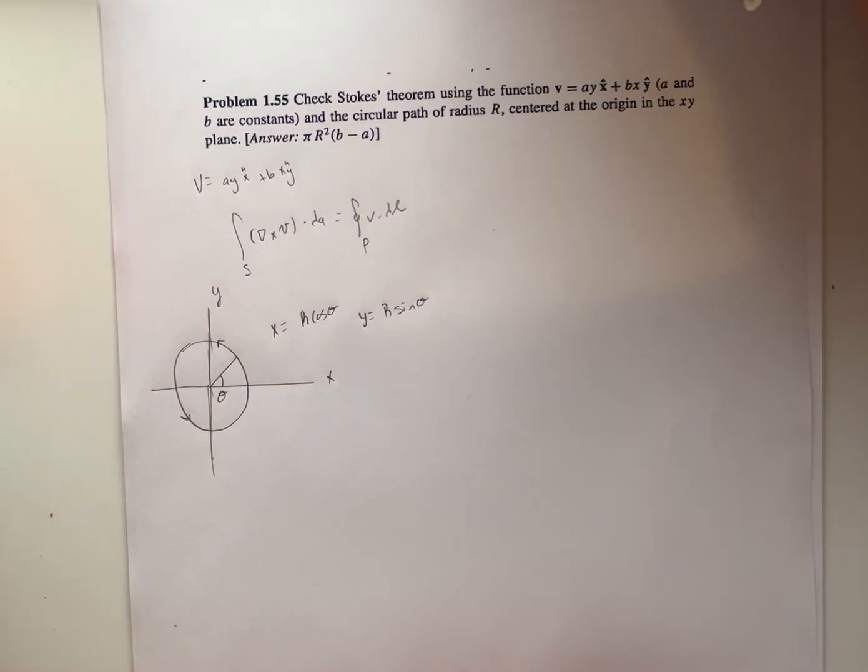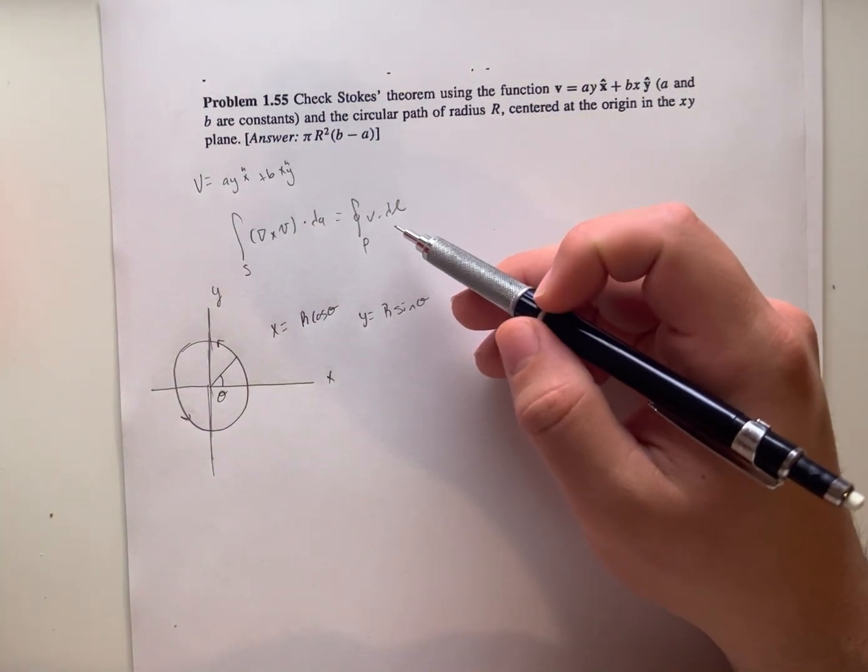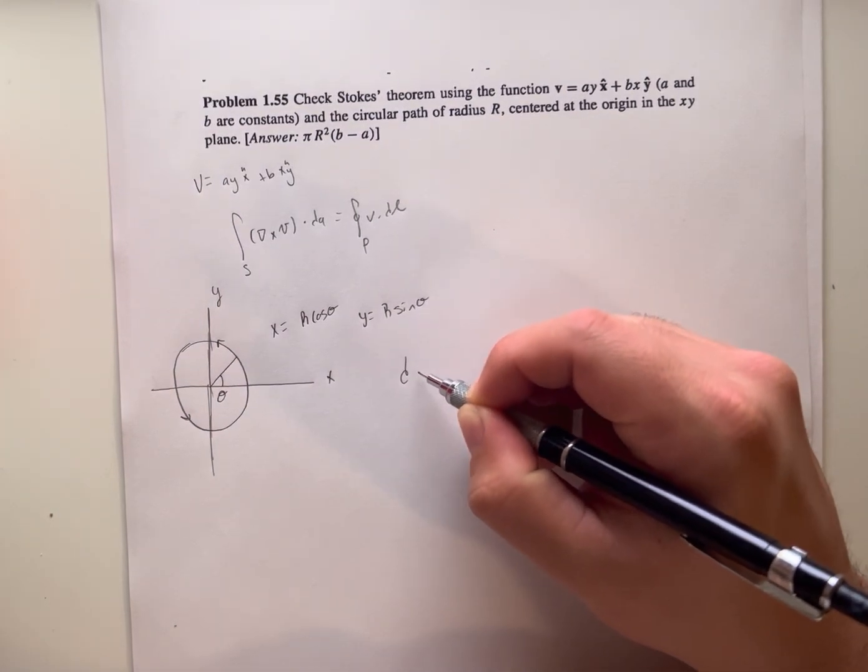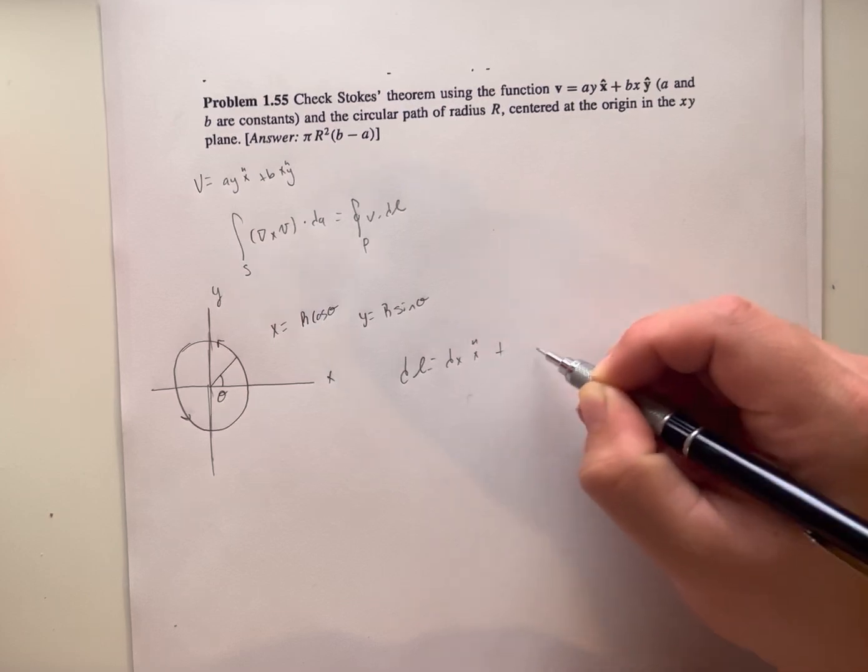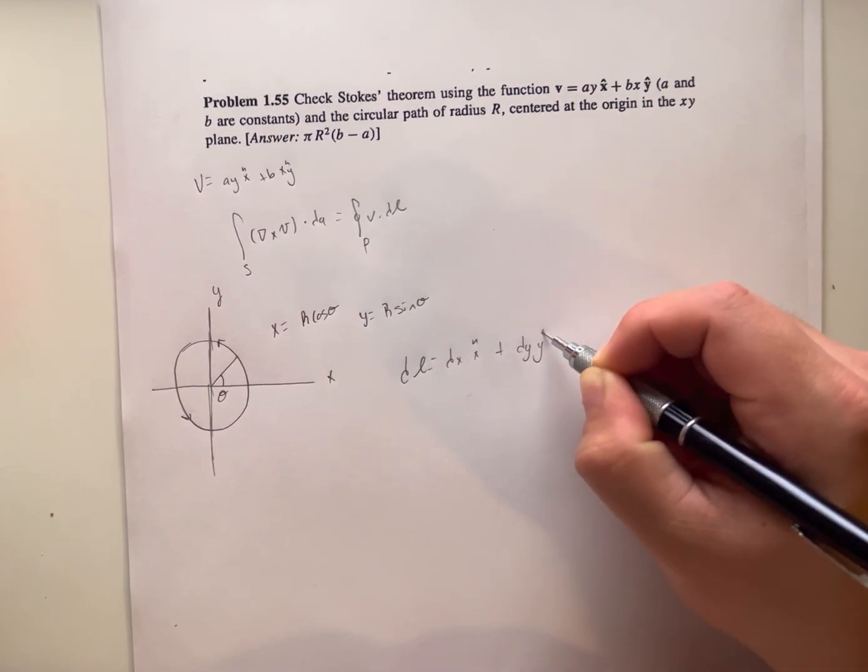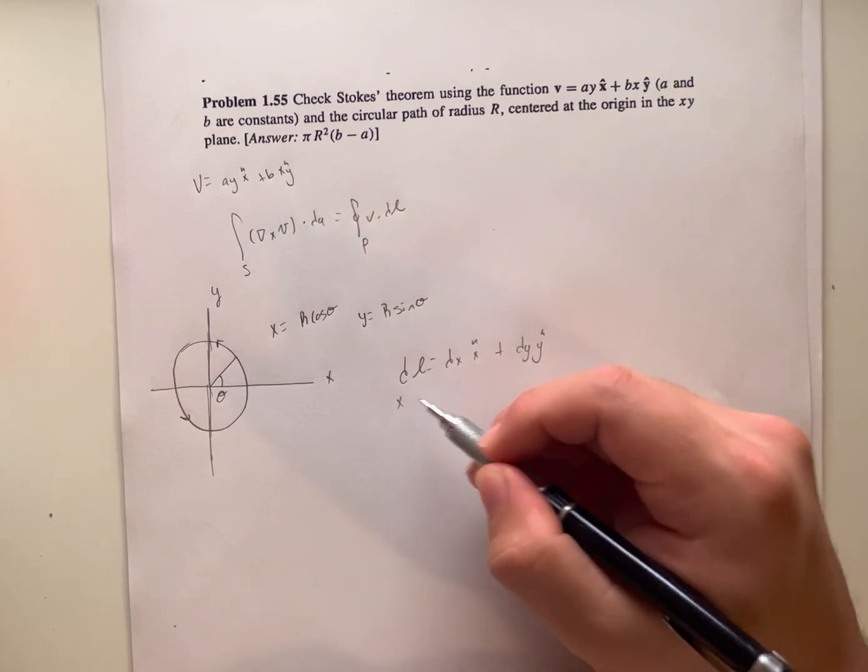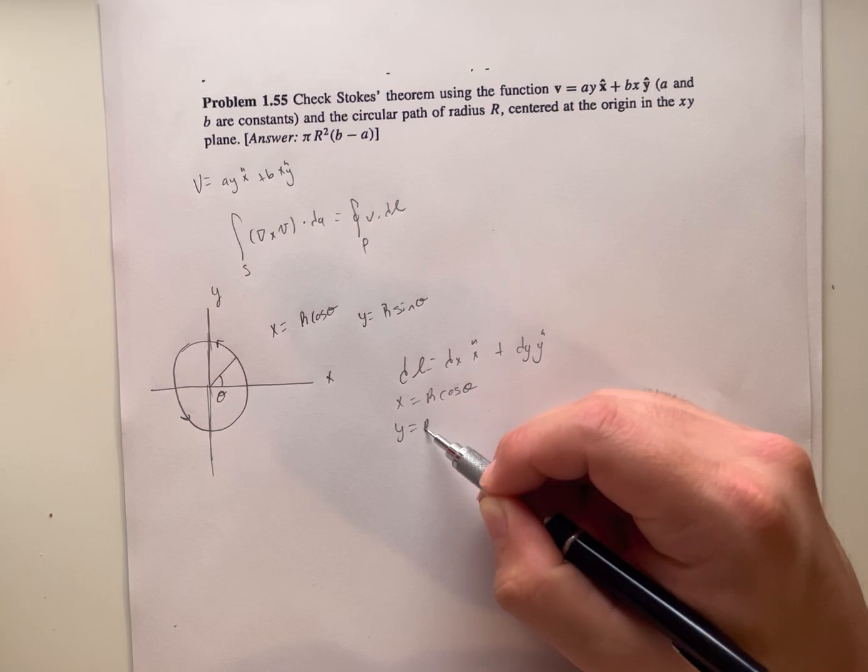We need to find the displacement vector dl along the boundary, which can be taken as dl equals dx*x-hat plus dy*y-hat, where x equals R*cos(theta) and y equals R*sin(theta).